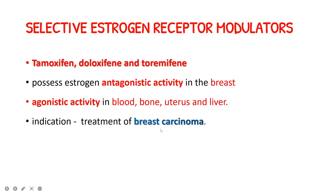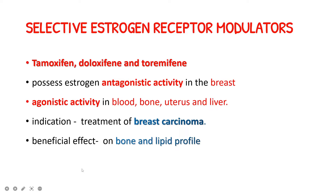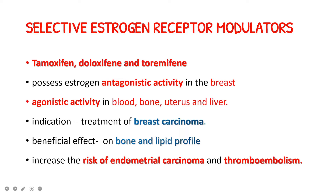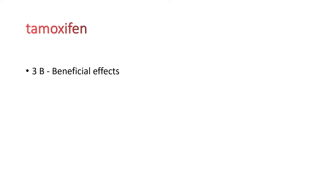The main indication of tamoxifen, deloxifen, and tormifen is the treatment of breast carcinoma because of their antagonistic activity in the breast. The beneficial effects include reducing bone resorption and improving the blood lipid profile by increasing HDL and decreasing LDL levels. The risk factors to remember are: agonistic activity on the uterus can cause endometrial carcinoma, and agonistic activity on the liver predisposes to thromboembolism.